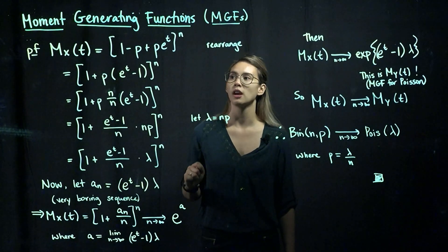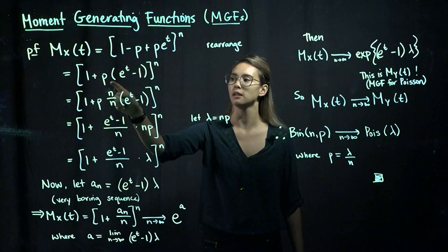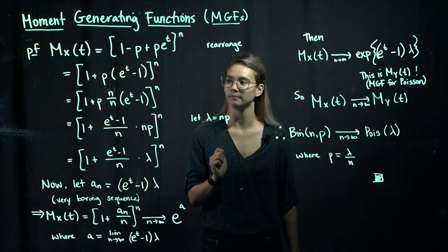Now what we're going to do is just rearrange a little bit. So we have inside the brackets 1 plus p times e to the t minus 1.